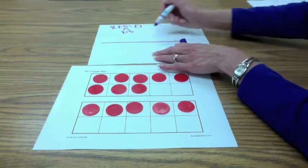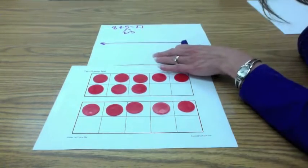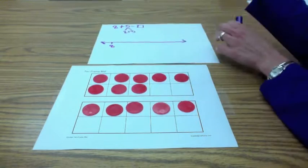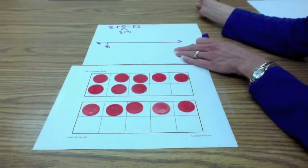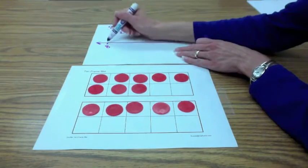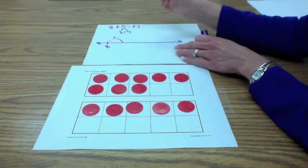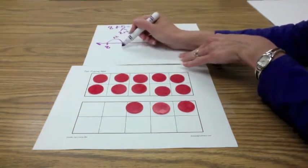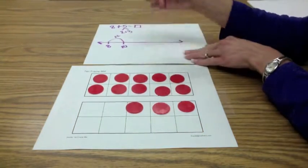Sometimes we use these empty number lines for kids to show their thinking, and so you started with 8. And then what did you do? Plus 2. Plus 2, and that got you to 10, your friendly 10. And then you saw what?